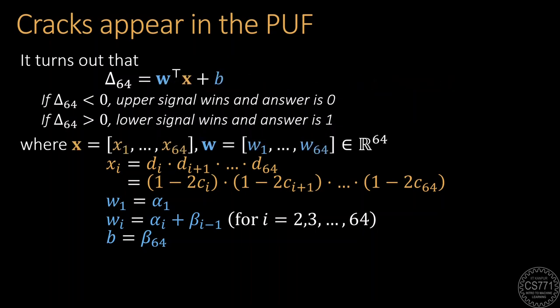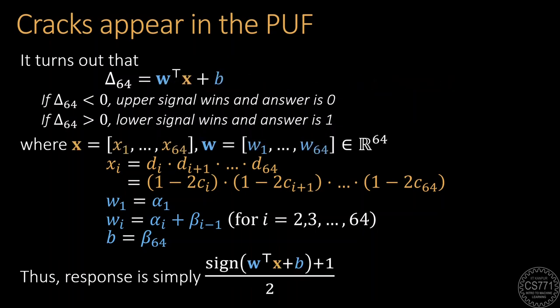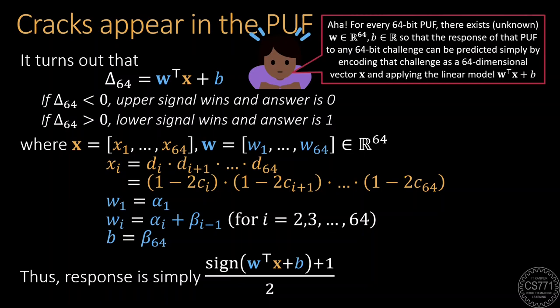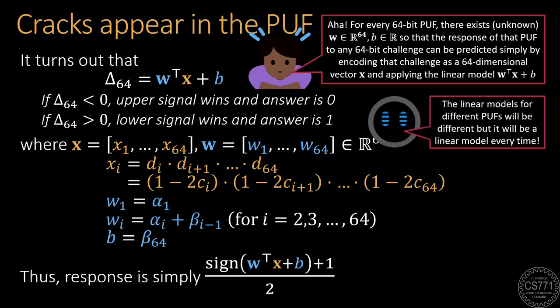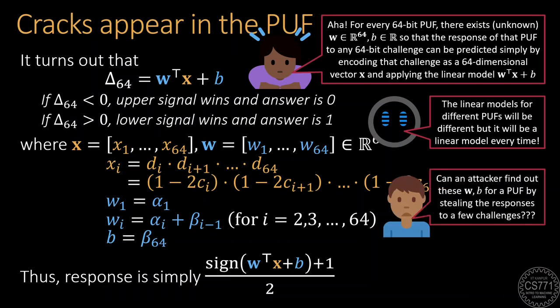Here, the x_i's are numbers that can be obtained by multiplying successive re-encoded bits of the challenge, and both b and the w_i's can be found from the delay parameters of the switches. We need only stare at this new expression for a moment to realize that this is nothing but a linear model hiding in plain sight. What we have just derived is a mathematical proof of the fact that despite all the complications put in while designing an arbiter PUF, its responses can be predicted by some unknown linear model. This linear model is unknown since we do not know the delay parameters p_i, q_i, r_i, s_i of the various switches in the PUF. But now comes the question: is it possible for an attacker to find out what this unknown linear model is by stealing a few challenge-response pairs? Unfortunately, the answer is yes.